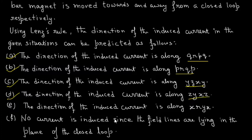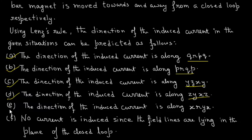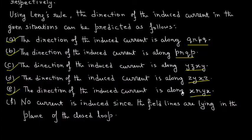Let us see problem E. The direction of the induced current is along XRYX. For problem F, no current is induced since the field lines are lying in the plane of the closed loop.